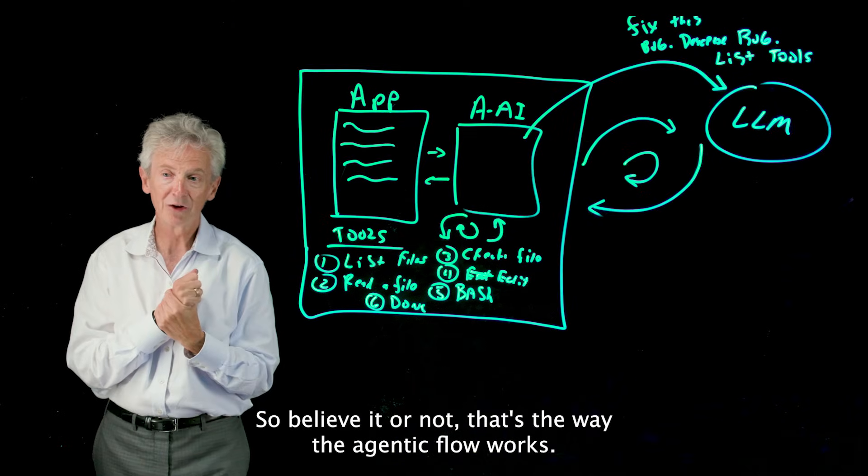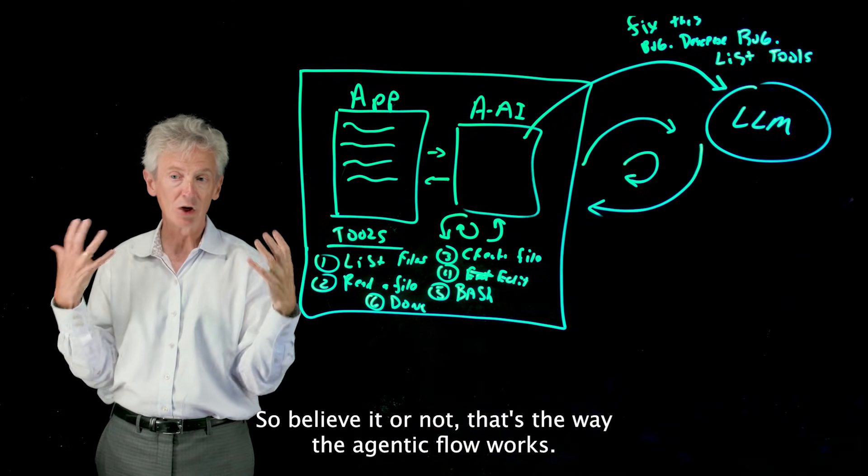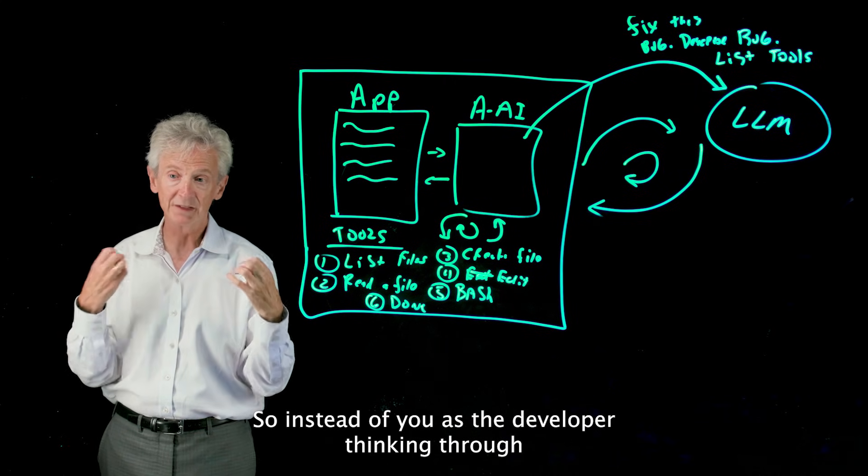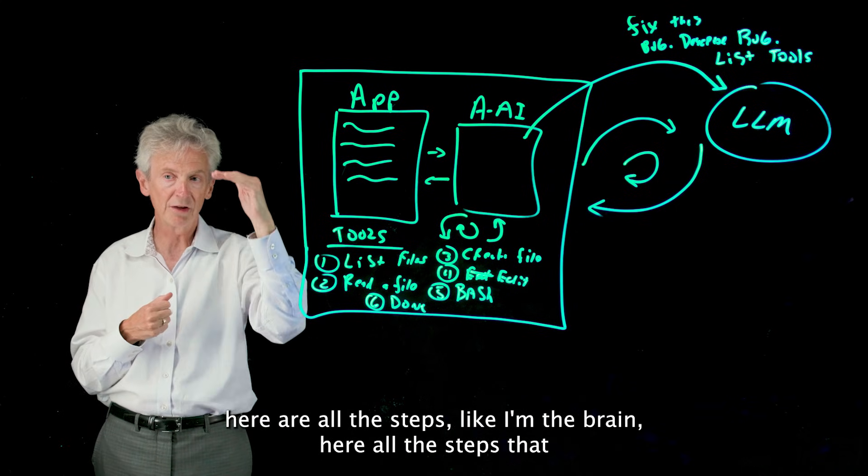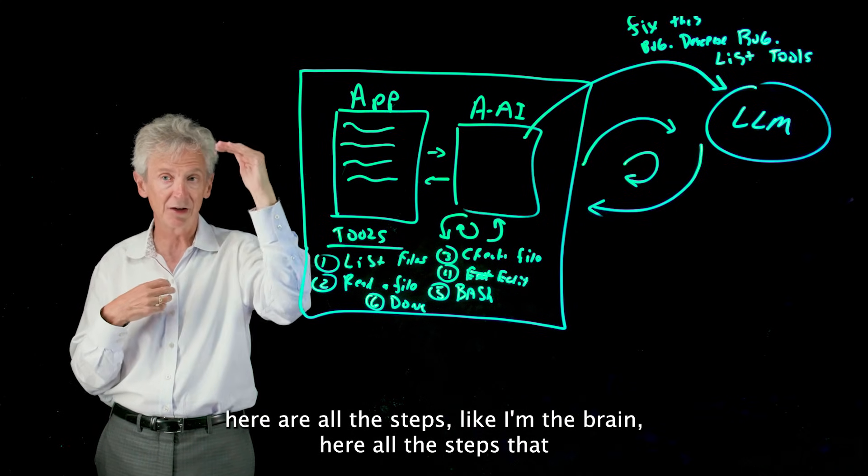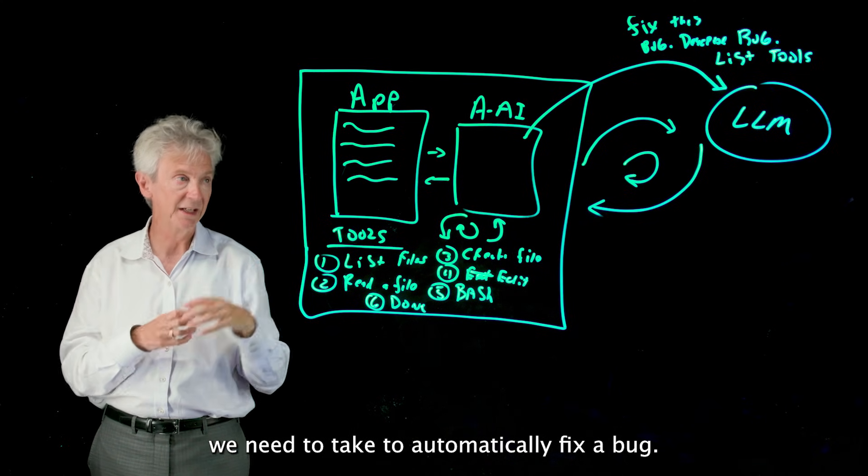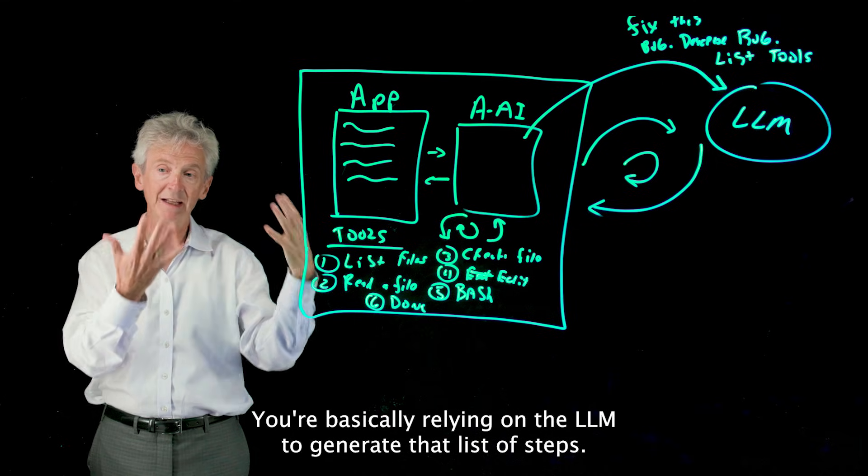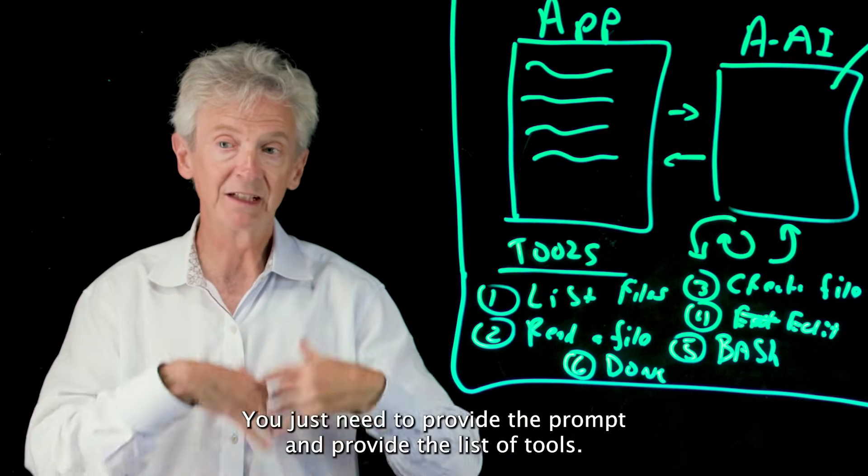So believe it or not, that's the way the agentic flow works, and it's actually a different way to solve a problem. So instead of you as the developer thinking through 'here are all the steps'—like I'm the brain, here are all the steps that we need to take to automatically fix a bug—you're basically relying on the LLM to generate that list of steps. You just need to provide the prompt and provide the list of tools.